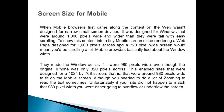Now we will see the topic: screen size for mobile. When mobile browsers first came along, the content on the web was not designed for narrow small screen devices. It was designed for windows that were around 1000 pixels wide and wider than they were tall, with easy scrolling. To show this content on a tiny mobile screen, since rendering a web page designed for 1000 pixels across on a 320 pixel wide screen would mean you would be scrolling a lot.